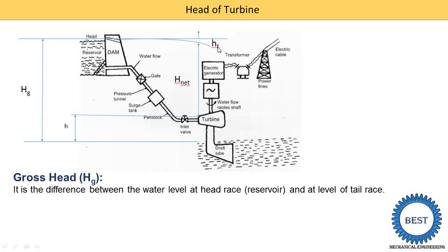The second point is the friction head, Hf — H means head and F means friction. When water is transferred from the reservoir to the tail race through the penstock, friction takes place between the water and the surface of the penstock. This is known as the friction head. Due to this friction, water loses a certain amount of energy, so this friction loss is subtracted from the gross head.